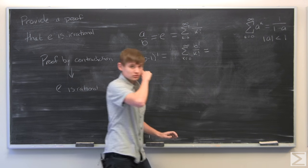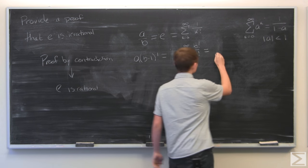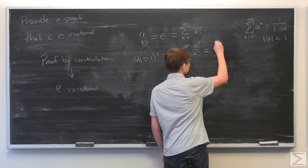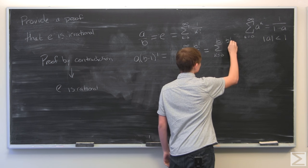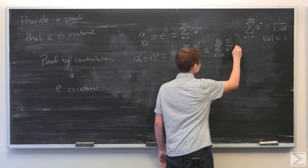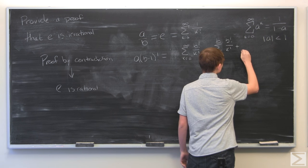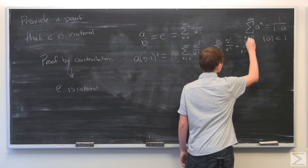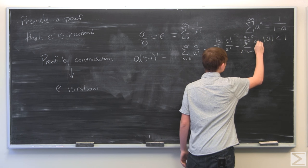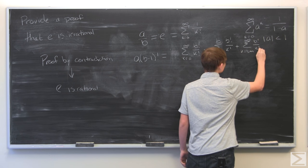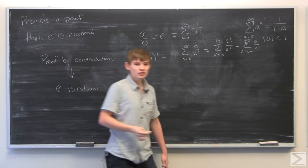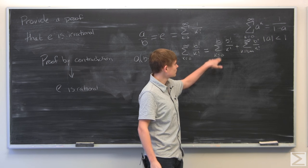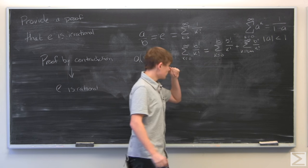And then we're going to split up the sum. And we're going to go from k equals 0 to B. So, we just split up this factorial from 0 to B and then from B plus 1 to infinity.